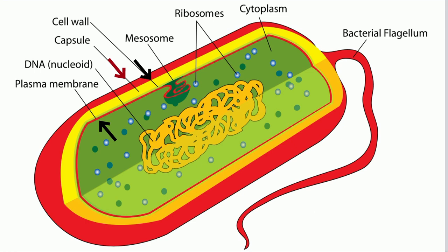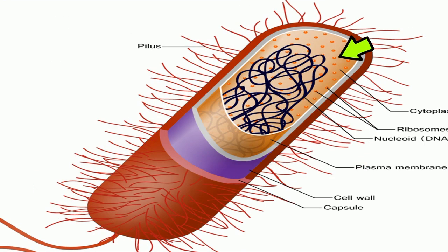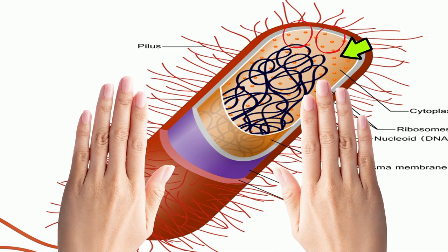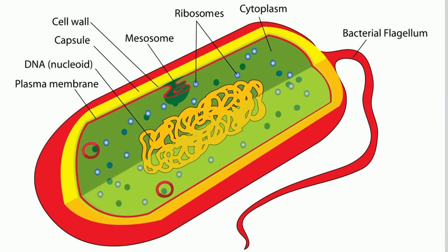Next, you will find cytoplasm inside a bacteria cell. It is a liquid substance and is the location of many biochemical reactions. You will also find ribosomes inside a bacteria cell. Some are found in the cytoplasm and other ribosomes are attached to the inner layer of the capsule, or the cell membrane.